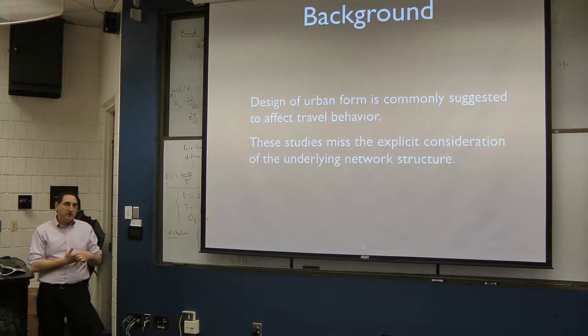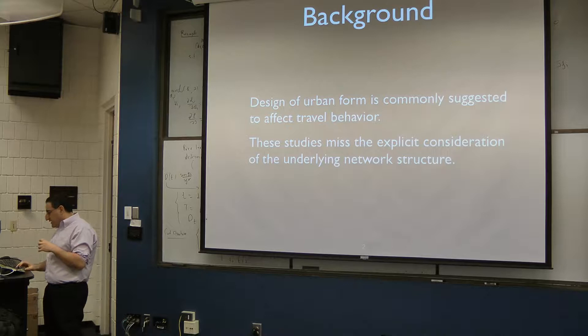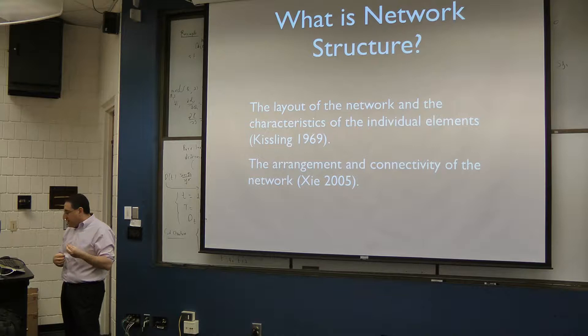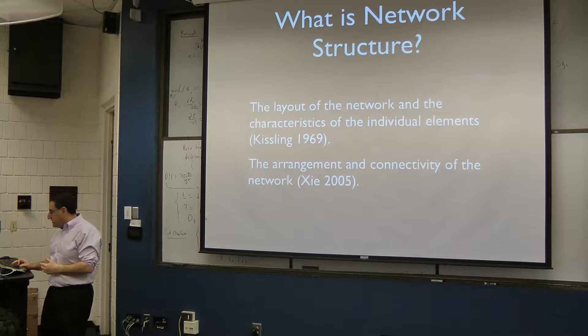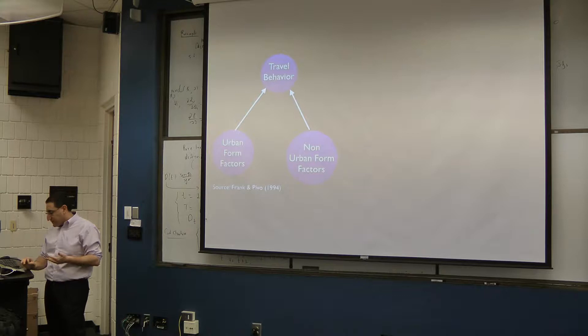They do talk about network structure in a very simplified way — things easily measured with GIS by taking a buffer around a point and looking at attributes within a very small area. But network structure is a lot more than that. It's the layout of the network and the characteristics of individual links, nodes, and paths. It talks about connectivity — how much you can reach, how easily you can reach things by using the network. We'll be talking about street networks here, but the same arguments could probably be applied to transit networks and other types of transportation networks.